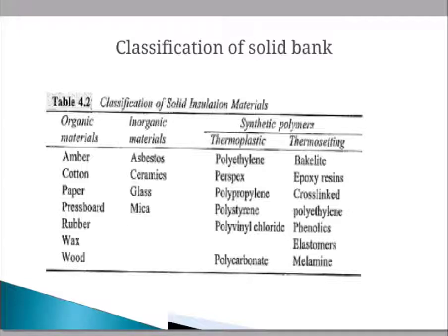In the synthetic polymers, there are two groups: thermoplastic and thermosetting. Thermoplastics include polyethylene, perspex, polypropylene, polystyrene, polyvinyl chloride, and polycarbonate. Thermosetting includes bakelite, epoxy resin, cross-linked polyethylene, phenolics, elastomers, and melamine. These materials are used in various applications.